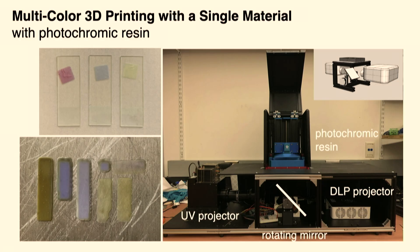We can even use this for other applications like 3D printing. If you know about resin 3D printing, it's typically a single color because there's only one tank of material. In the future, we can actually mix our photochromic dye technology into the resin and have a multicolored DLP 3D printer. Here's a first test with the MIT logo.